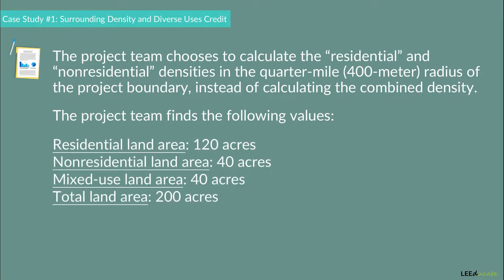The project team finds the following values: residential land area equals 120 acres, non-residential land area equals 40 acres, mixed-use land area equals 40 acres, and total land area equals 200 acres.